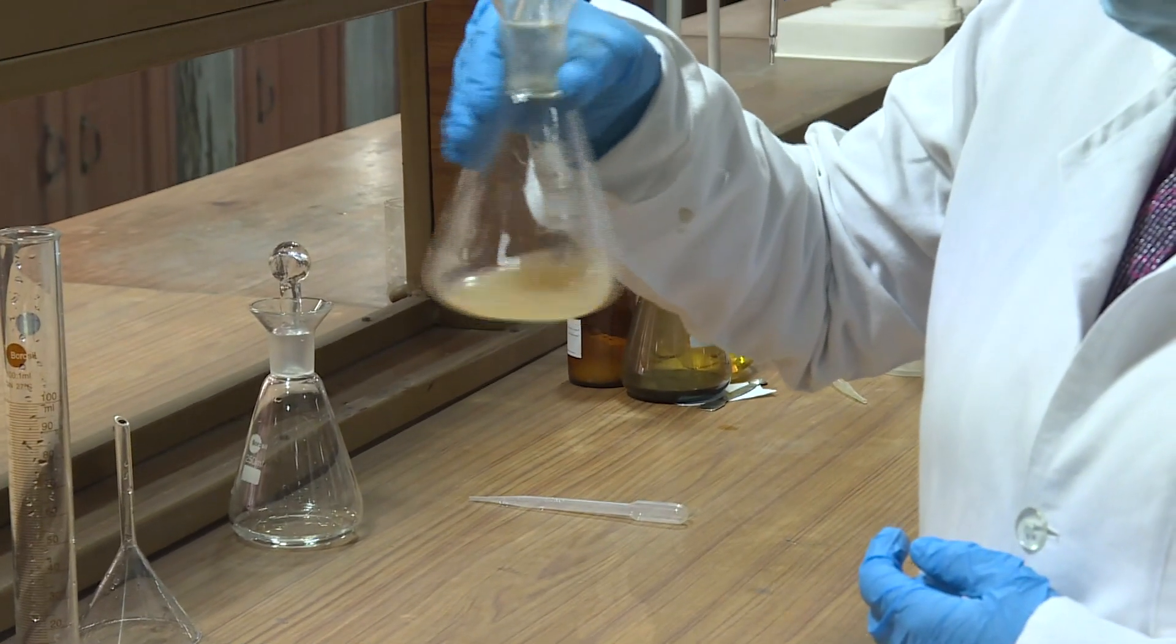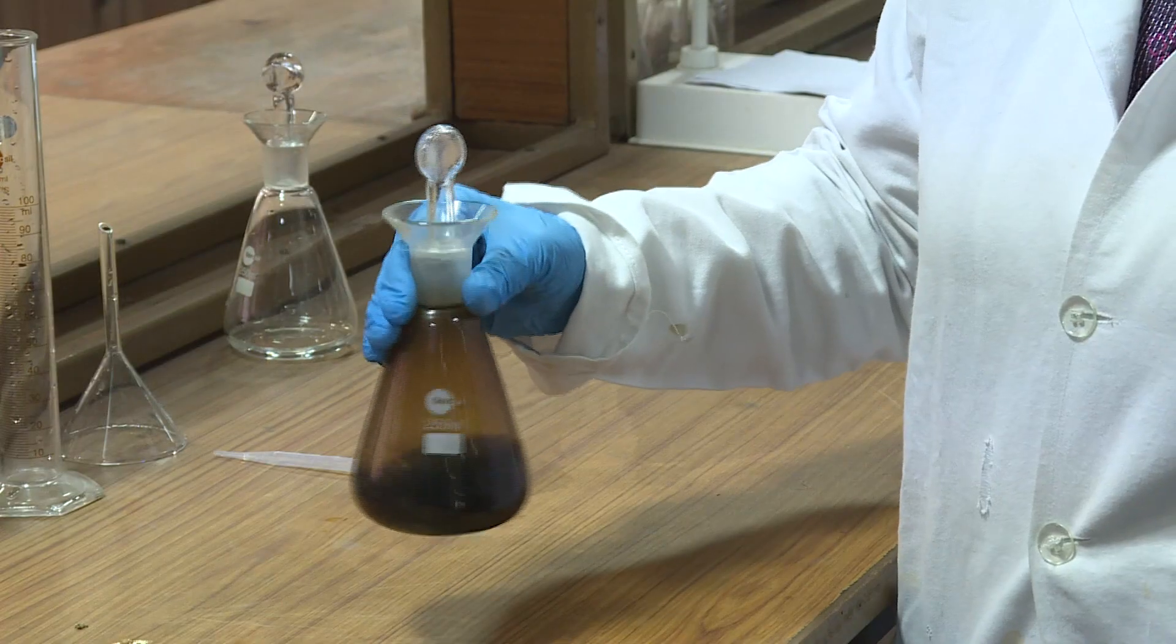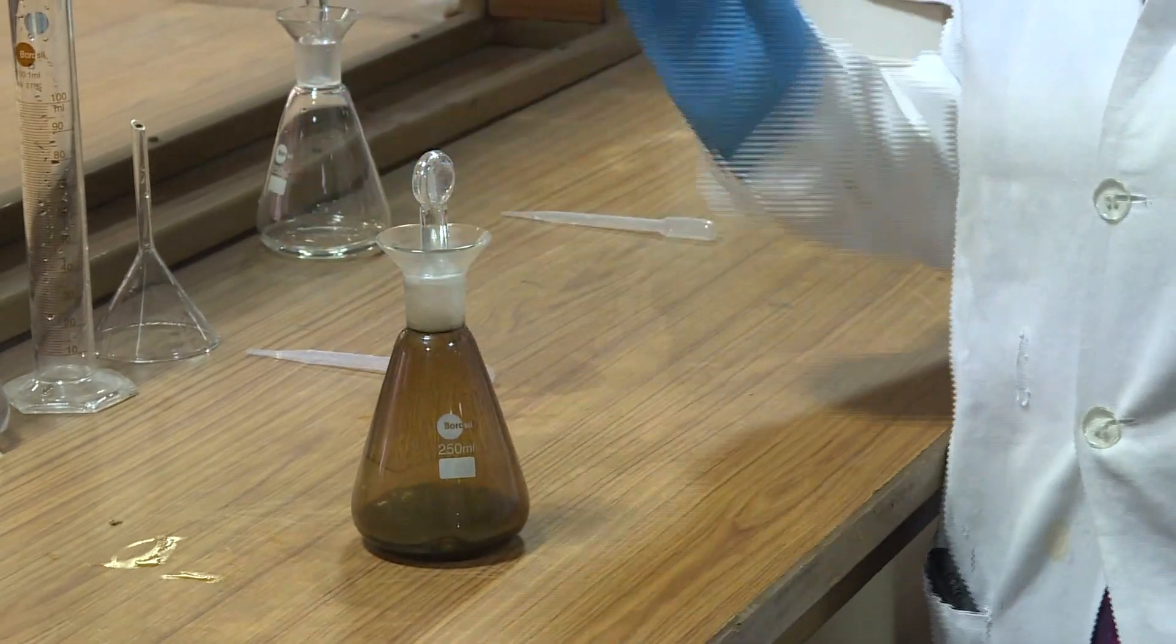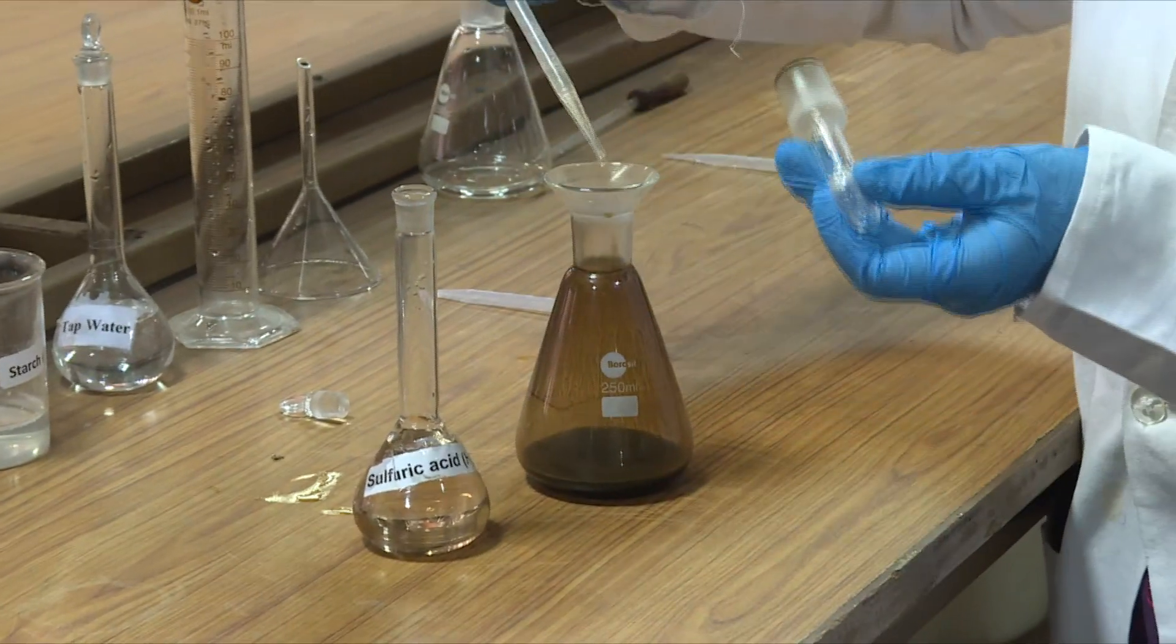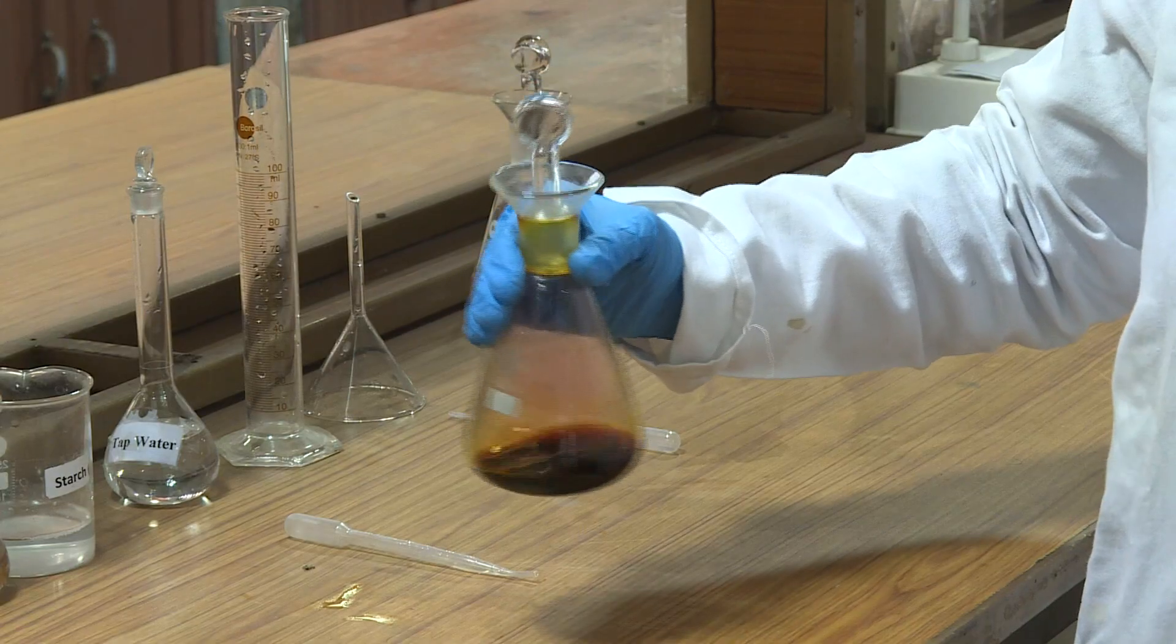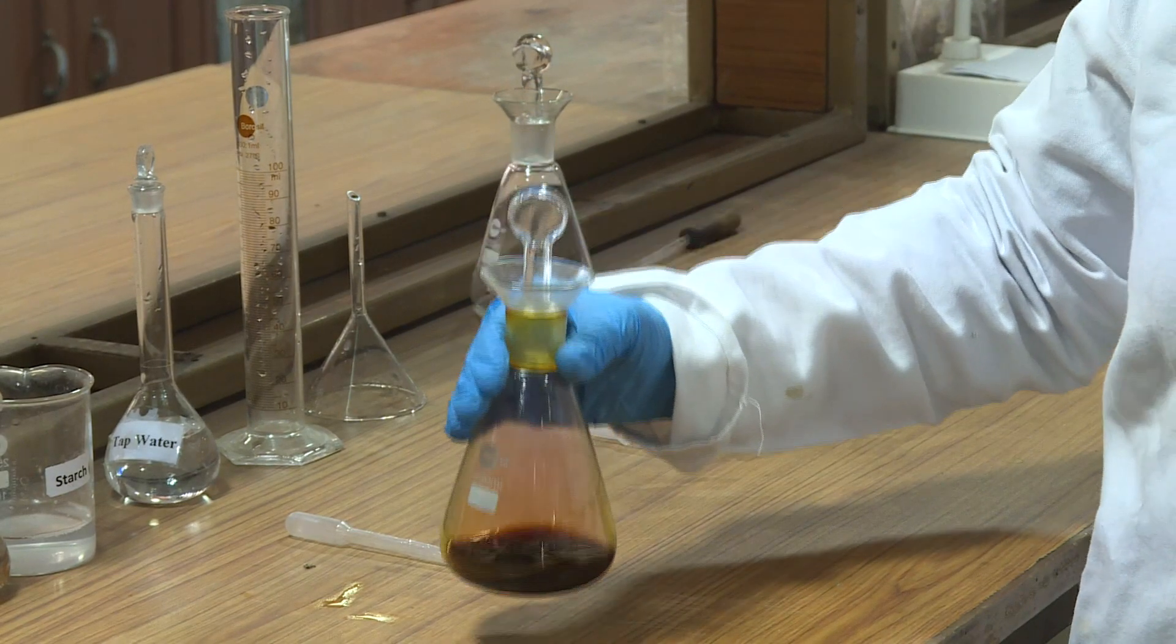Repeat this process of shaking and settling at least three times. Add 1 ml of concentrated sulfuric acid, insert the stopper, and shake again. Allow the dark brown solution to stand for 5 minutes.